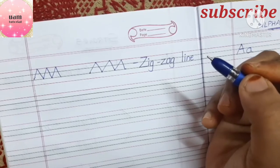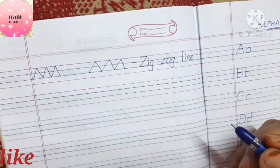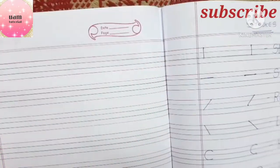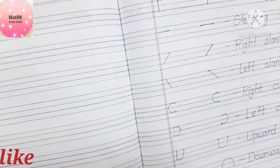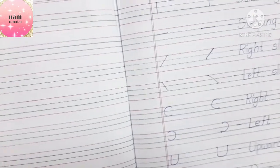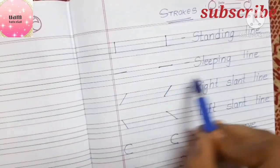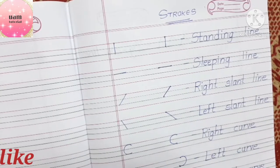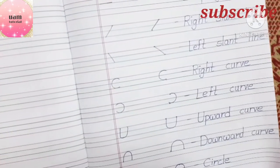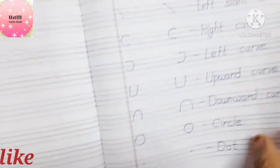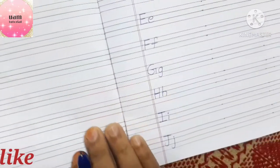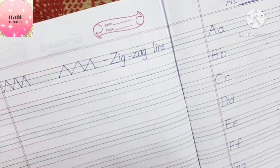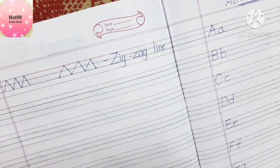These are the different strokes we will use to write the alphabets: standing line, sleeping line, right slant line, left slant line, right curve, left curve, upward curve, downward curve, circle, dot, and zigzag line.